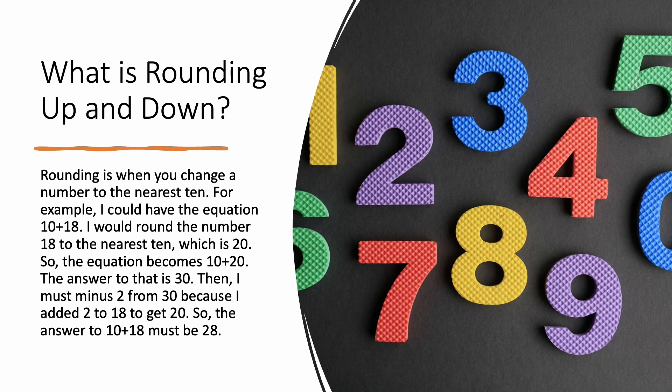So what is rounding up and down? Rounding is when you change a number to the nearest 10. For example, I could have the equation 10 plus 18. I would round the number 18 to the nearest 10,